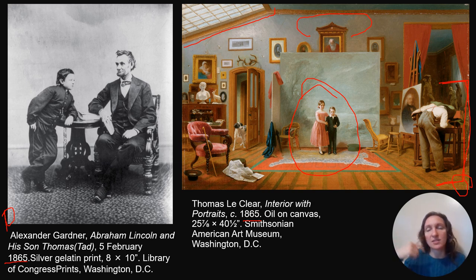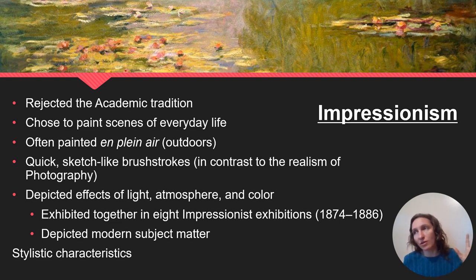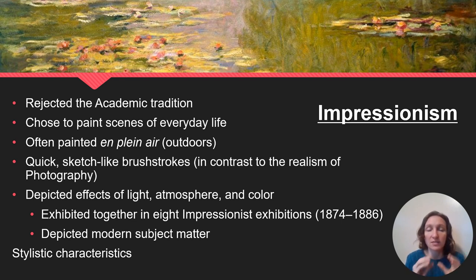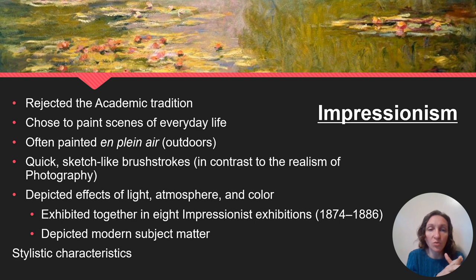Now we're going to talk about Impressionism. Impressionism is a rejection of the academic tradition. Everything we're talking about right now is pretty much a rejection of the salons and the academies. Impressionists choose to paint everyday life, they often paint outdoors, and they produce very quick paintings. One of the things they're rebelling against is the academic tradition that a painting must take months and be a super photograph-like depiction — because we have photographs now. These quick brushstrokes are iconic of Impressionism, along with their depictions of light specifically.